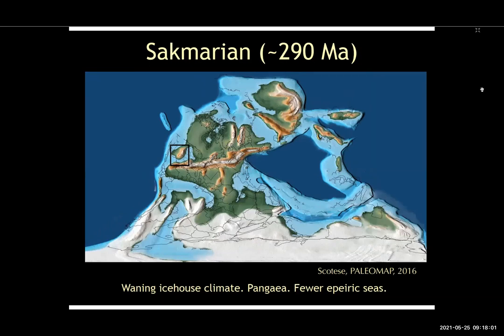By a bit later in the early Permian, we have the waning ice house climate. In the Sakmarian, much of that Gondwanan ice collapsed. Ultimately we'd be left with ice only in Australia after this time. Still Pangea of course, but fewer epeiric seas because of the hypsography of Pangea.